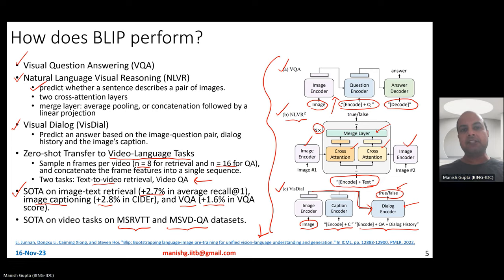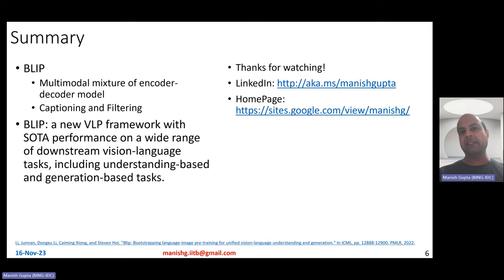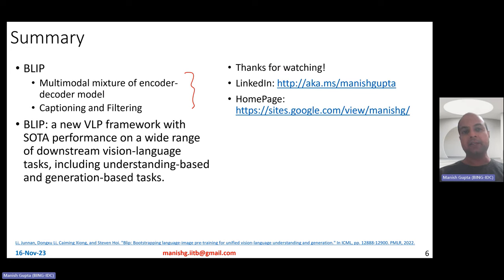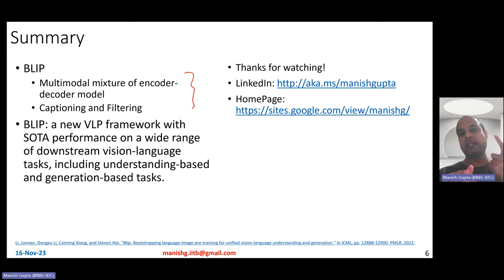So that's BLIP. In summary, BLIP consists of two main parts: a multimodal mixture of encoder-decoder model, and captioning and filtering. BLIP is a new visual language pre-training framework achieving state-of-the-art performance on a wide range of downstream vision-language tasks, including understanding and generation tasks — image captioning, image retrieval, visual question answering, natural language visual reasoning, visual dialogue, and video-based tasks.